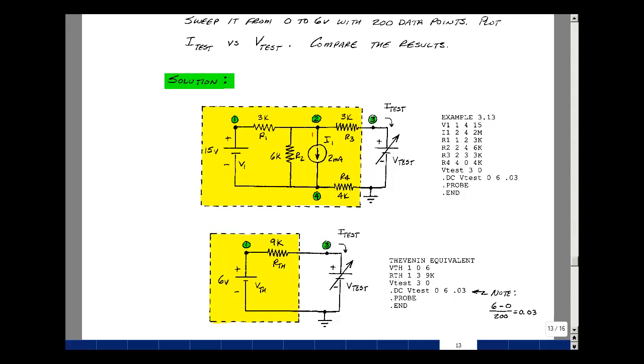For current source we have to label the tail first and then the tip and the reason for this is that SPICE assumes that every element absorbs power. So current will be coming in the plus terminal going out the minus. The current source has to begin with the letter I. I call this I1. It's between nodes two and four with a value of two milliamps.